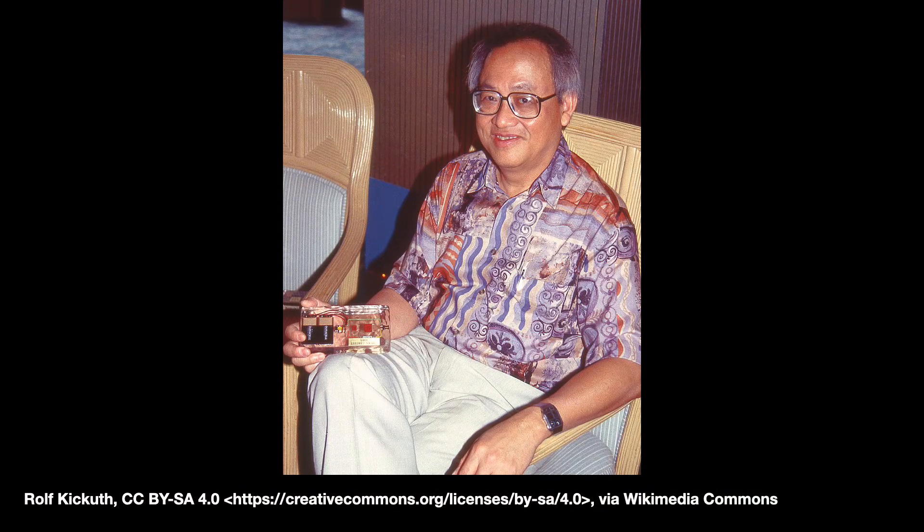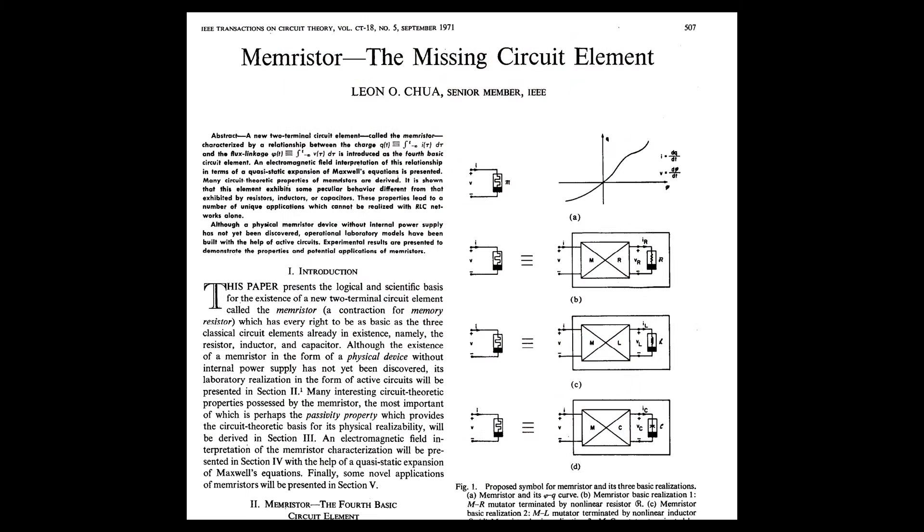In 1971, the UC Berkeley professor Leon Chua published a paper proposing a new circuit which he called the memristor. At the time, it was a strange proposal steeped in theory, and most people forgot about it.